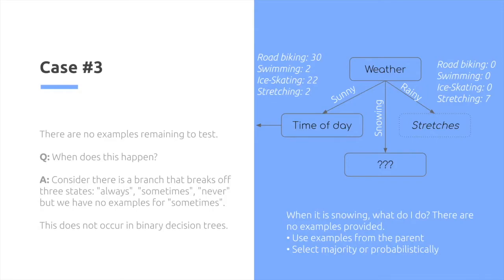I'll need to look at the parent node, look at its data, and derive a conclusion from there. Similarly, we can also select majority in this case, or a weighted probability depending on the frequency of data from the parent.